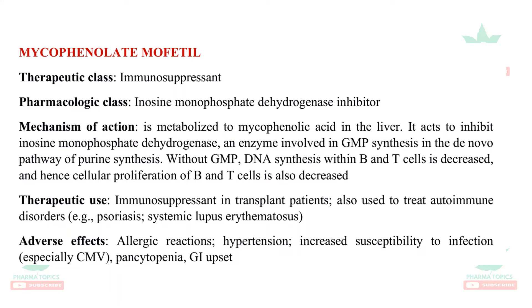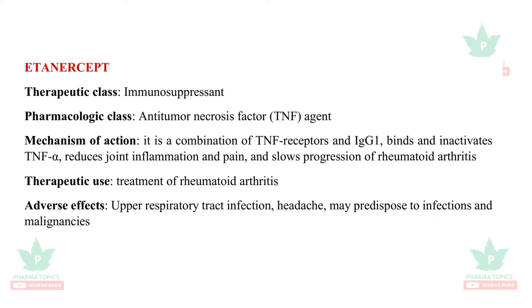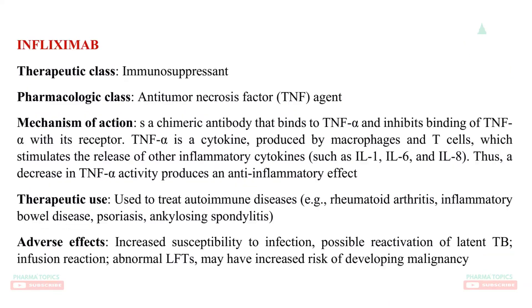Etanercept is an anti-tumor necrosis factor agent. It acts in combination with TNF receptors and IgG1, reduces inflammation and pain, and slows the progression of rheumatoid arthritis. Adverse effects include upper respiratory tract infections, headache, and predisposition to infections and malignancies.